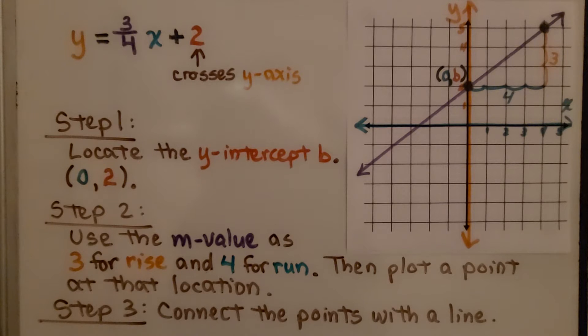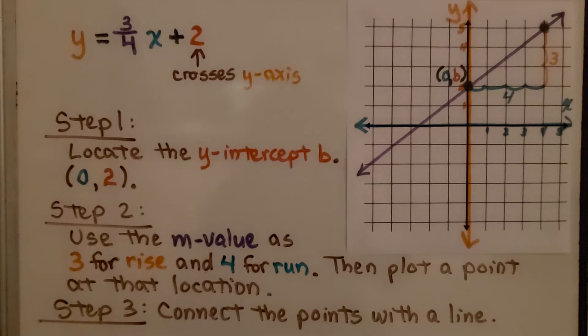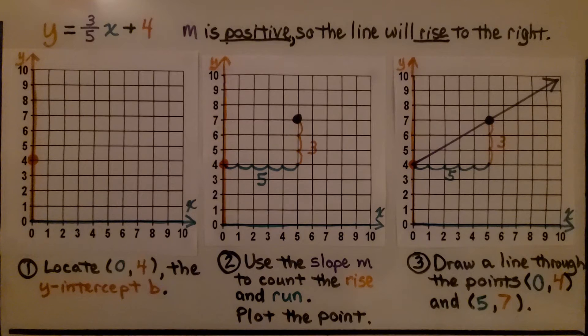Third step, we connect the points with a line. But what happens when we have a negative slope or a negative y-intercept b, or a positive with a negative? I'll show you.